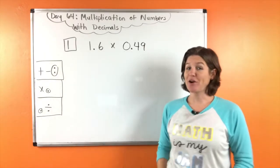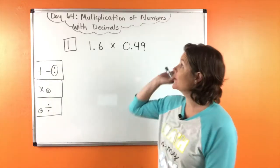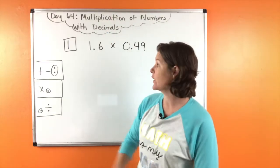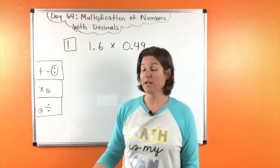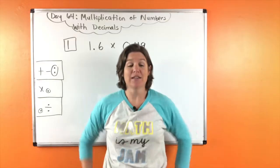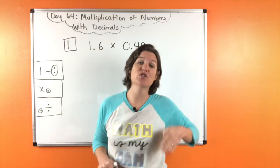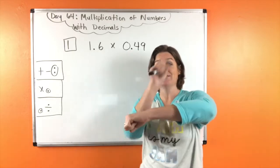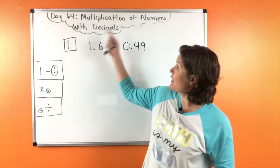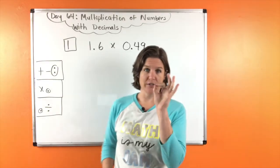Hello everybody and welcome to McCarthy Math 155 — this is the fifth grade edition. Today we are working on multiplication of numbers with decimals. It's day 64. Let's go ahead and review real quick. We know that when we add or subtract decimals, we need to line them up. When we multiply numbers with decimals, we need to shift our decimal at the end. And when we divide with decimals, we need to shift them to begin. So today we are multiplying, which means we don't have to worry about our decimal until the end.